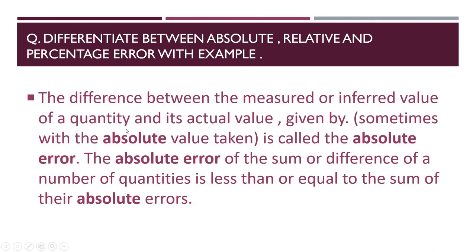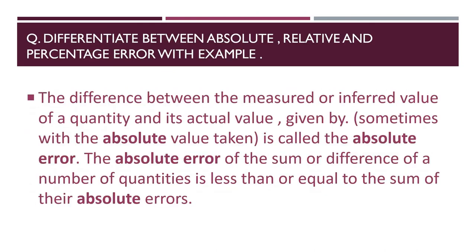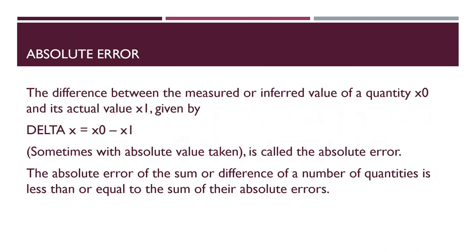Now, here is the error we are discussing. Absolute error: the difference between the measured or inferred value of quantity x0 and its actual value x1 is given by delta x equals x0 minus x1. Sometimes with absolute value taken, this is called absolute error. The absolute error of the sum or difference of a number of quantities is less than or equal to the sum of the absolute errors.